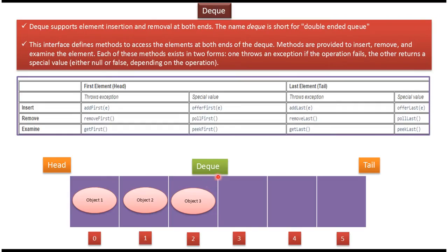Here you can see the Dequeue which holds a group of objects. The left side is the head end and the right side is the tail end. Dequeue supports element insertion at both the head end and the tail end. Dequeue is short for Doubly Ended Queue. The Dequeue Interface provides methods to insert, remove, and examine elements at both ends.